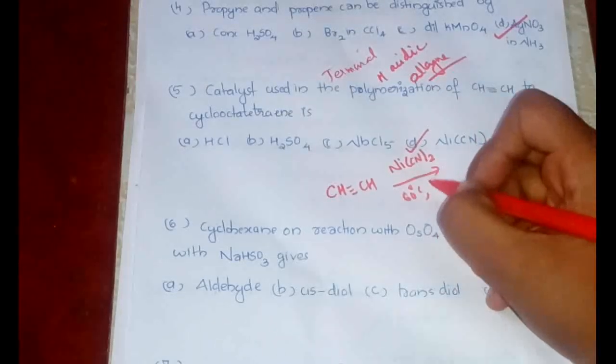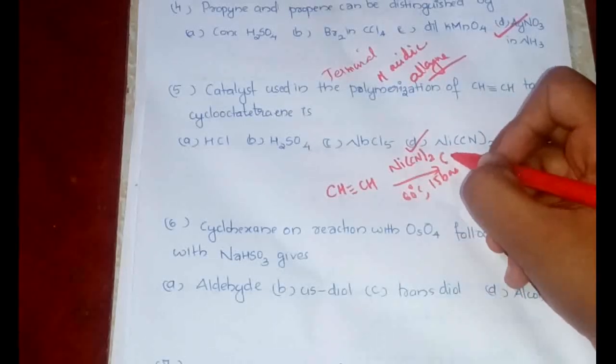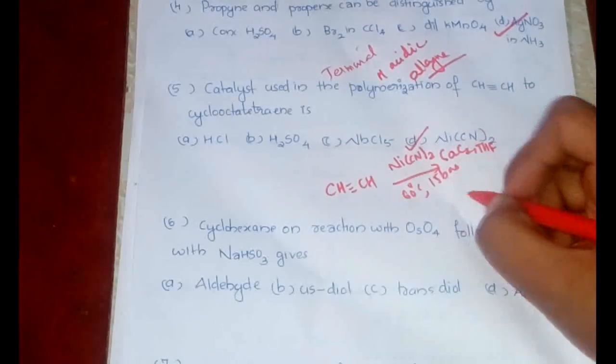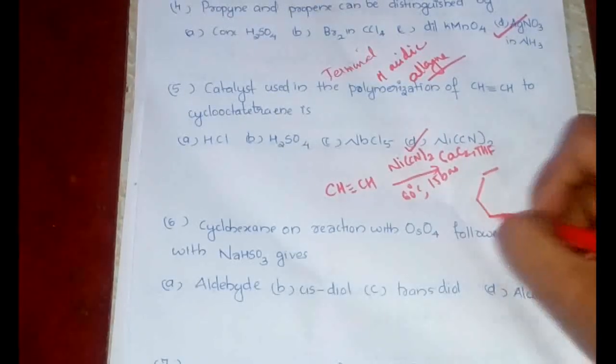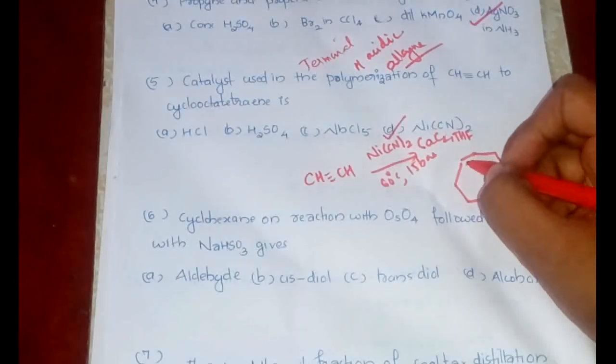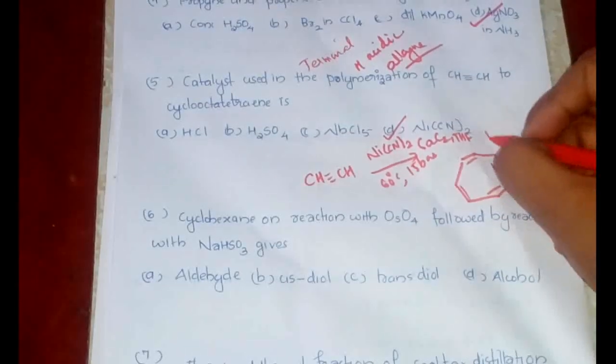And what would be formed? Cyclooctatetraene will be formed, and this particular reaction is known as Reppe synthesis. Very important, keep this one in mind: the reaction as well as the name and the product, everything you have to keep in mind.